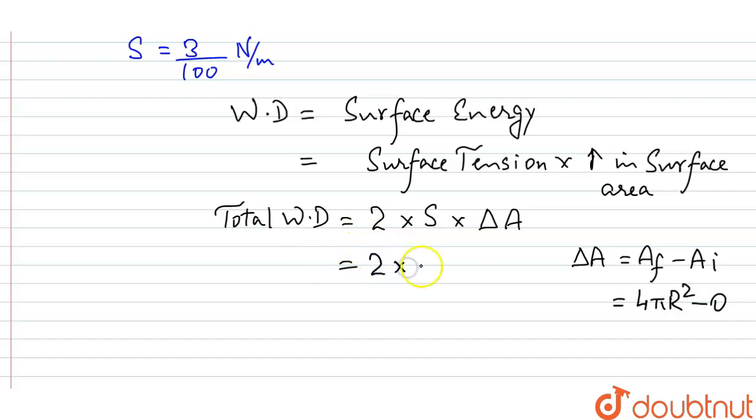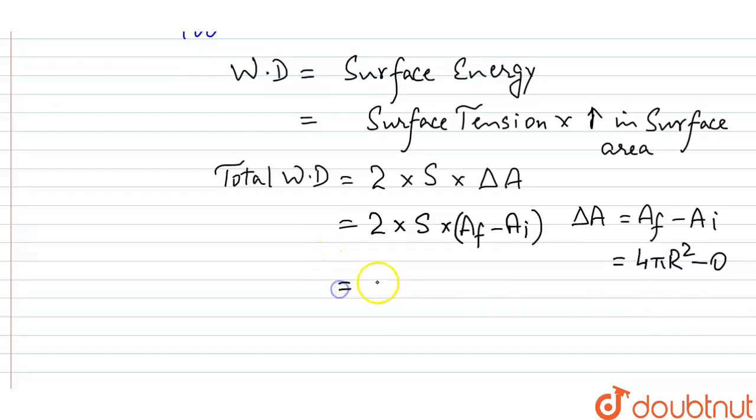Now I will put all the values here—that is the surface tension and here Af minus Ai. Now, the value of surface tension is what? 3 by 100. And here, 4 into π into r is what? 10 to the power minus 1 whole square.